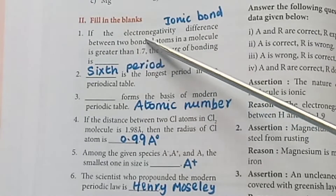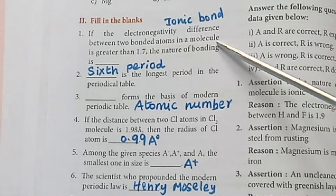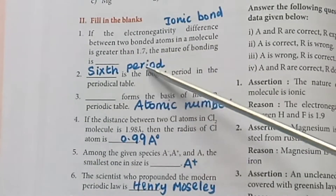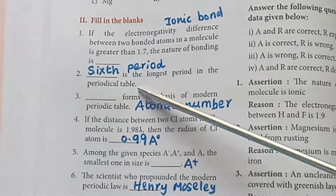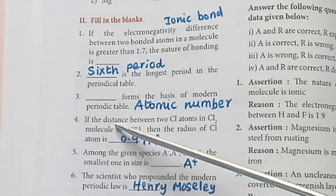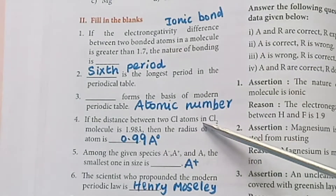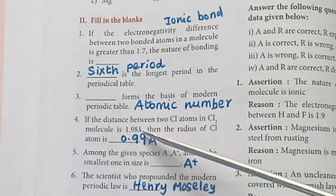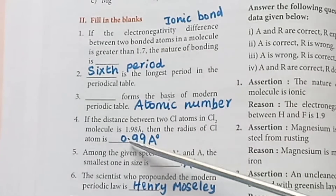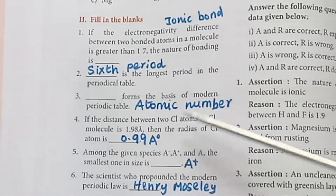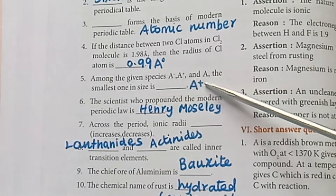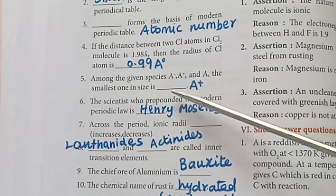Fill in the blanks. If the electronegativity difference between two bonded atoms in a molecule is greater than 1.7, the nature of bonding is ionic bond. The sixth period is the longest period in the periodic table. Atomic number forms the basis of the modern periodic table. The distance between two Cl atoms in Cl2 molecule is 1.98 Å, so the radius of the Cl atom is 0.99 Å. Among the species A⁻, A⁺, and A, the smallest one in size is A⁺.